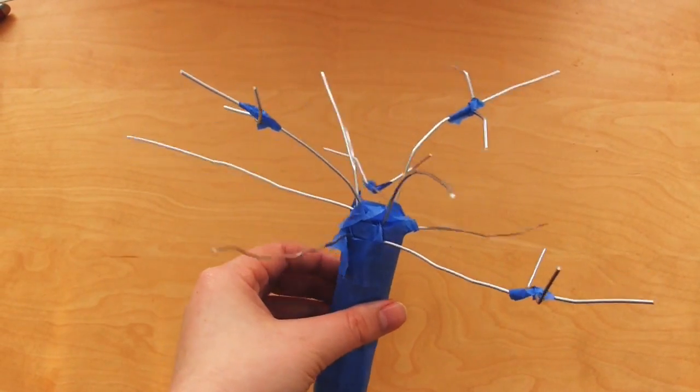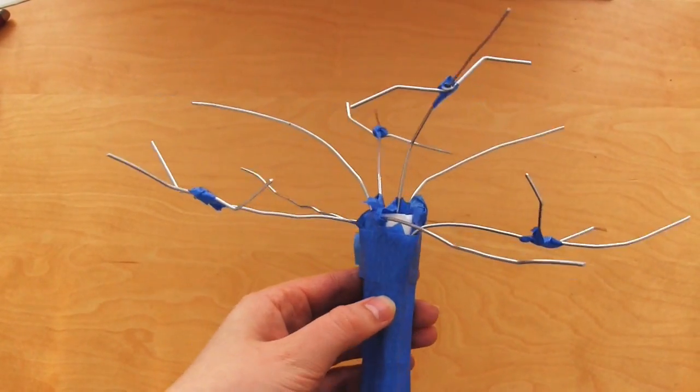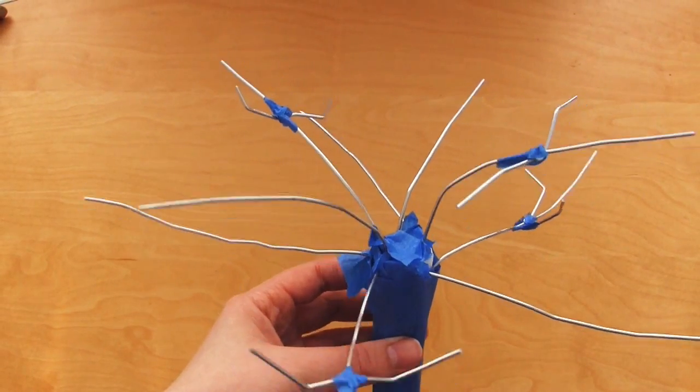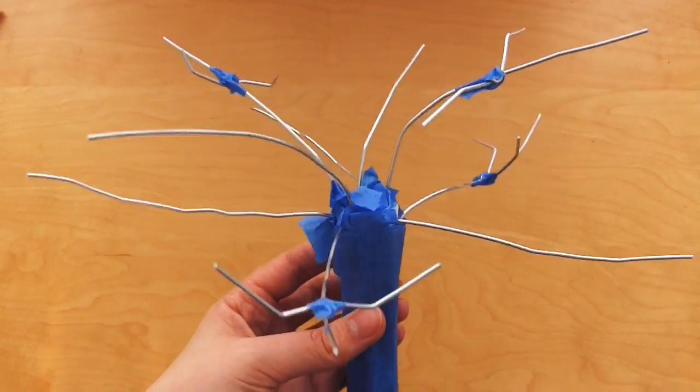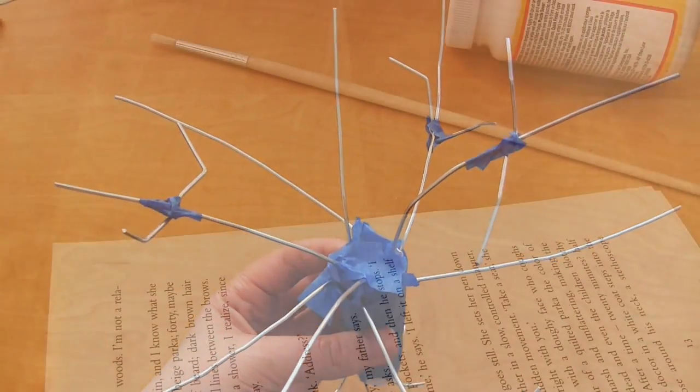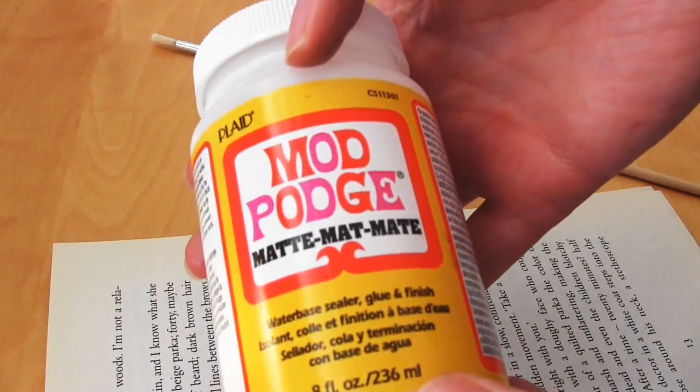Next is the paper mache step, which sets the whole thing in place. So if there's any more manipulating of the wire you want to do, anything you want to add, any different positions you want to put the branches in, then now is the time to do it.